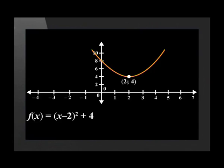Here is the sketch of f of x equals 2, open brackets, x minus 2, close brackets, squared, plus 4. The y intercept is at 8 and the turning point is at 2, 4.